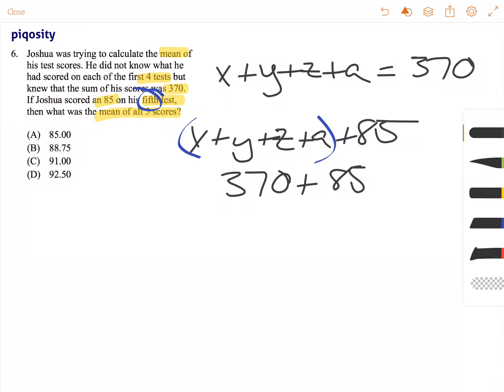So if we have 370 plus 85 divided by 5, we can figure out what his overall mean is. So let's go ahead and add 370 and 85 together.